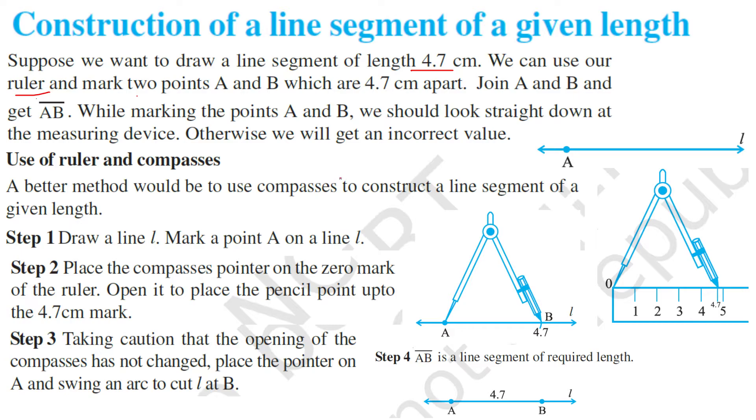Then we take the measurement through the ruler on the compass. How much? 4.7 cm. See this. 0 to 1, here is 4.7.